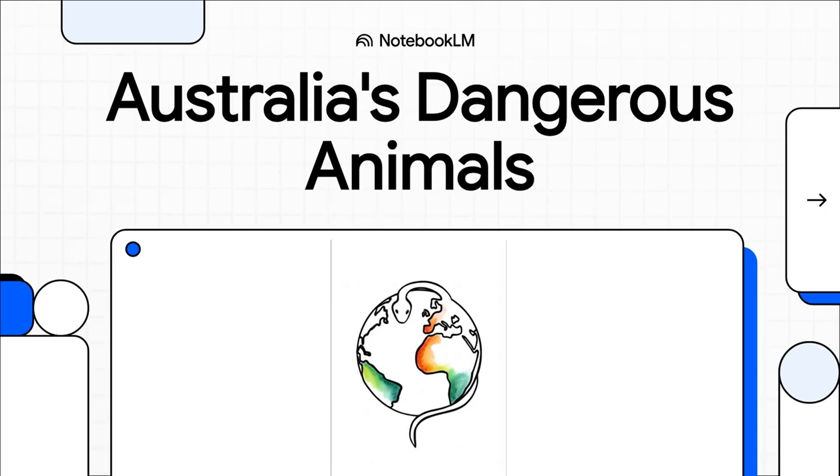Hey everyone, and welcome! When you think of Australia, what comes to mind? Beautiful beaches, sure. But also, probably a place where it feels like everything is trying to kill you. But how much of that is actually true? And what's the real story behind its famously deadly animals? Let's get into it.